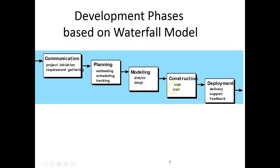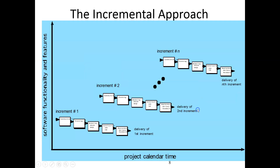These are the development phases based on the waterfall model: communication, planning, modeling, construction, and finally deploying. Under communication you can find project initiation and requirement gathering. Under planning you have estimation, scheduling, and tracking. Under modeling you have analysis and design. Construction includes coding and testing. Finally, deployment includes delivery, support, and feedback.